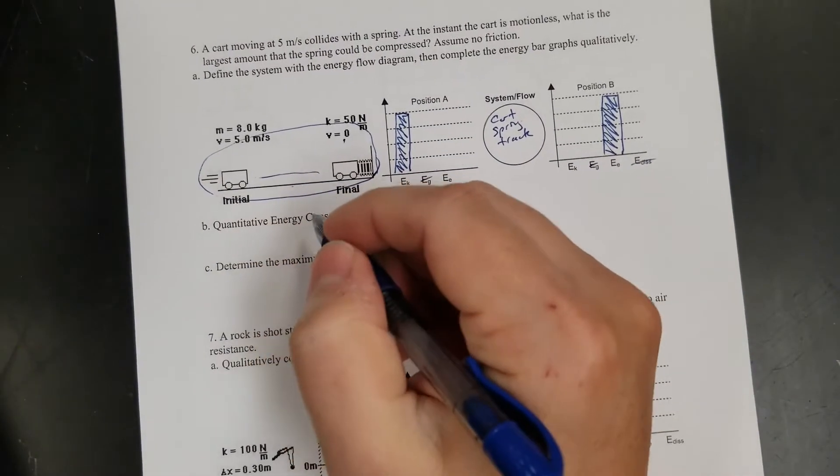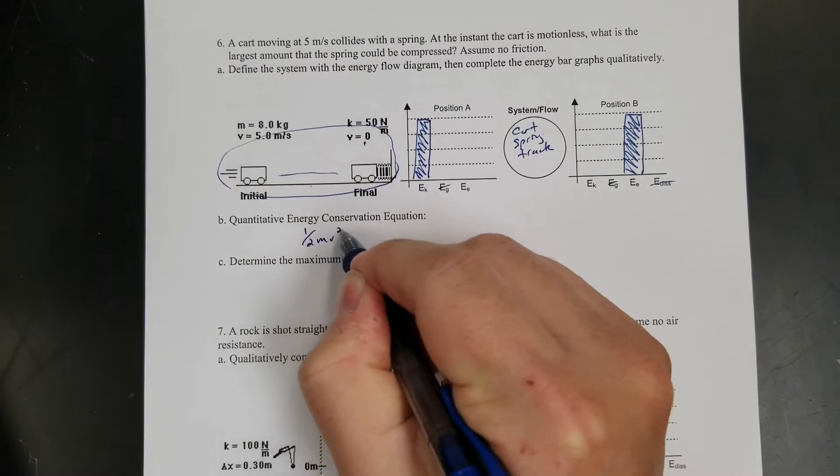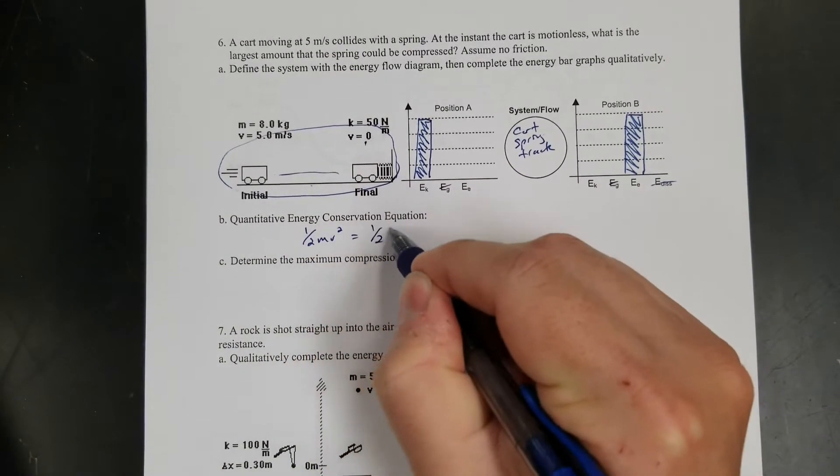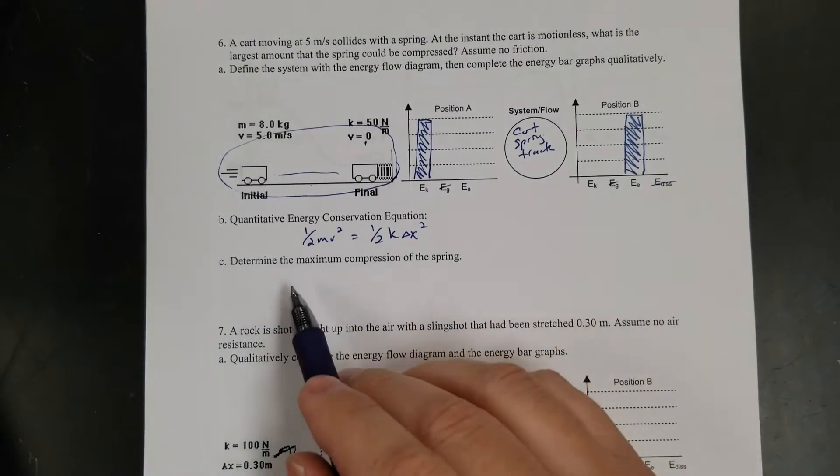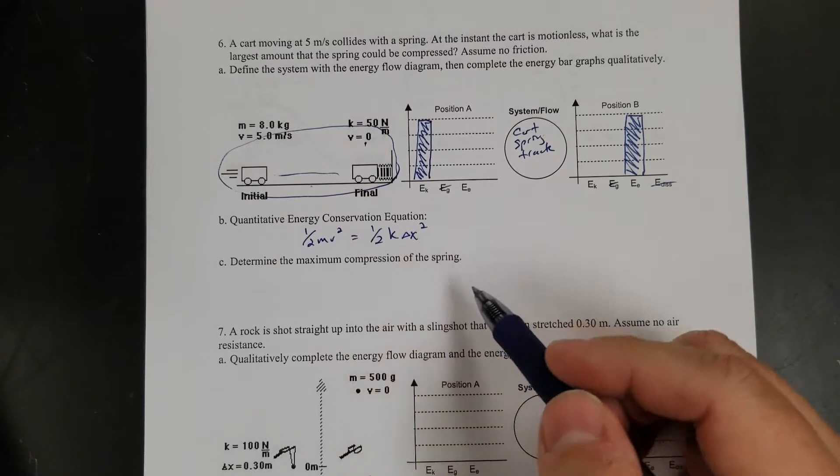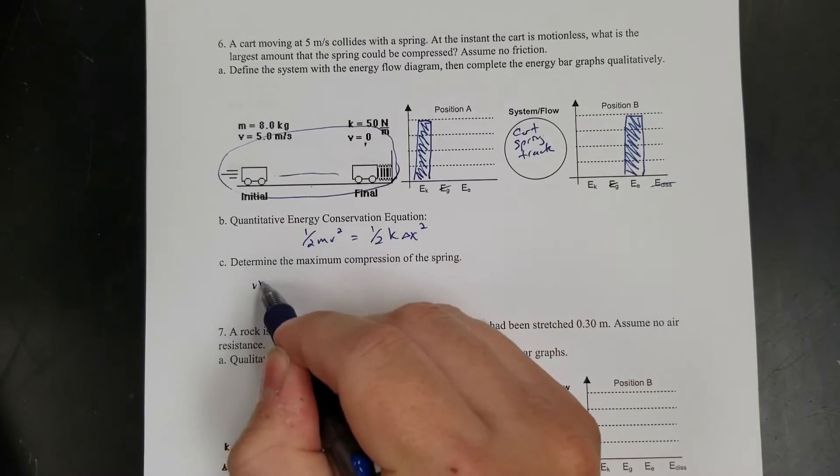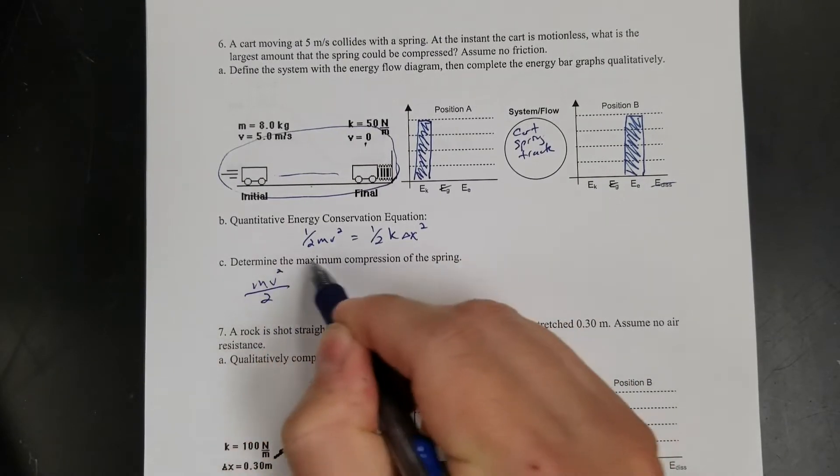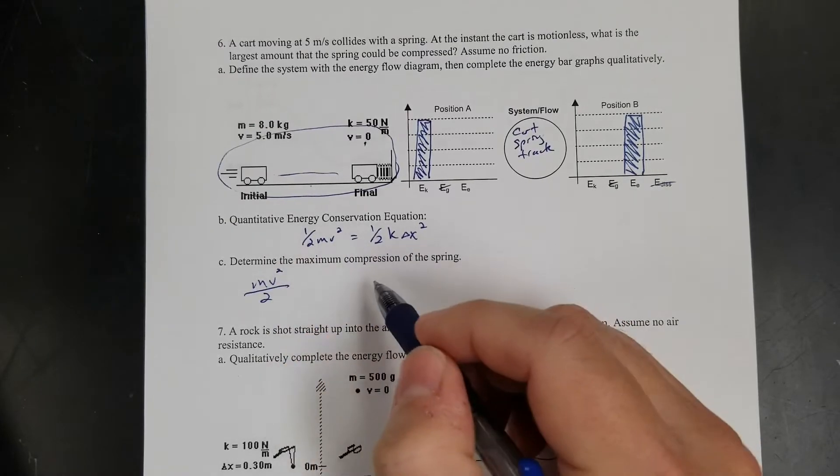All right, so there's my diagram. I have no work, I have no heat, so it's just kinetic turning into elastic. So when I write my equation, that's going to say one-half mv squared equals one-half kx squared. Determine the maximum compression of the spring. So I want to solve for delta x.